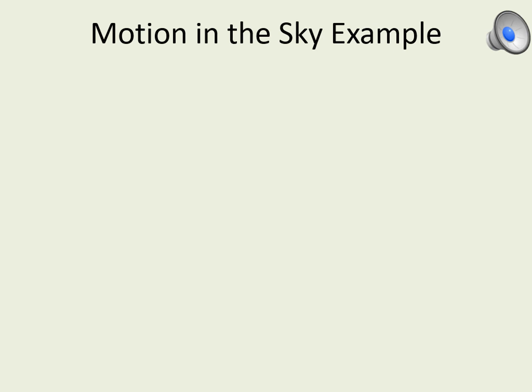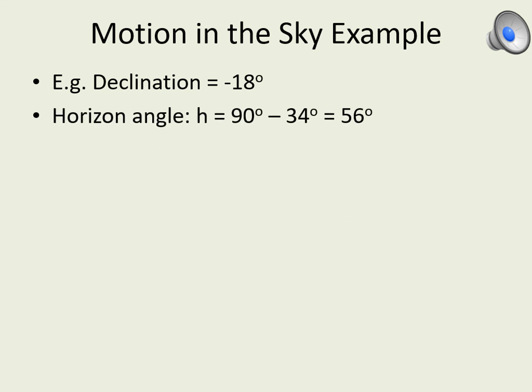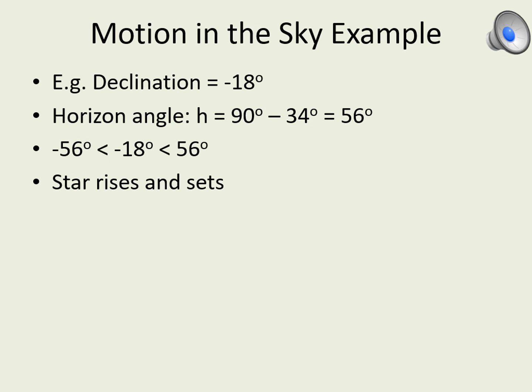Let's look at an example of finding how a star moves in the sky. Imagine one of your stars has a declination of minus 18 degrees. The degrees part of the declination is most important — the minutes are a fine adjustment. We've already seen that the horizon angle at our latitude is 90 minus 34 degrees, which equals 56 degrees. The star has a negative declination, so it's in the southern half of the celestial sphere and won't be circumpolar. However, it's not below minus 56 degrees, so it does rise above our horizon — it's between minus 56 and plus 56 degrees, so it rises and sets from our location.